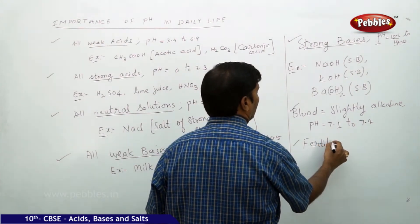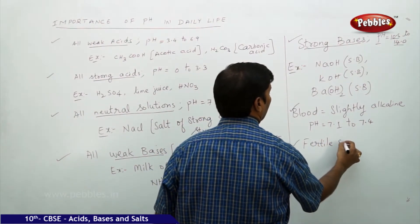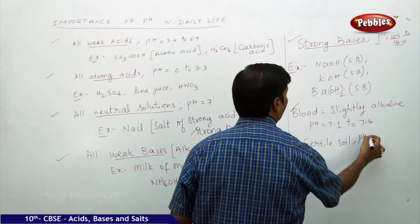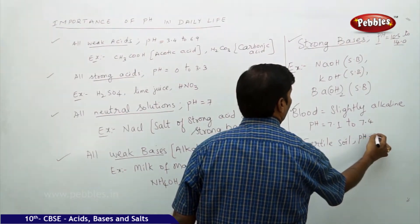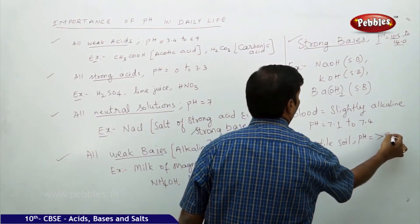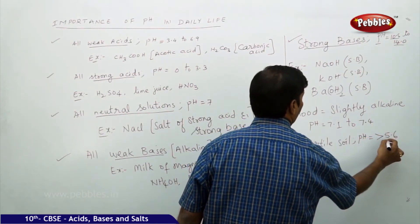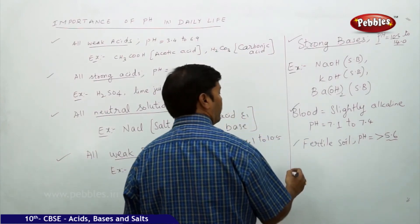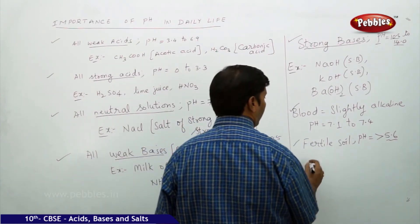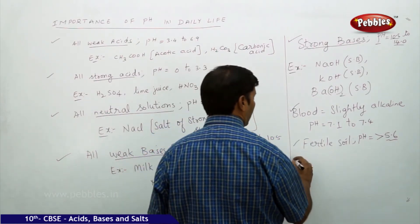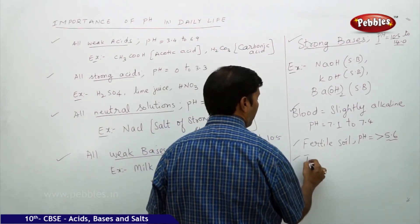Fertile soil should always have a pH greater than 5.6. Only then is it considered fertile.